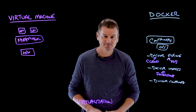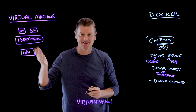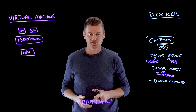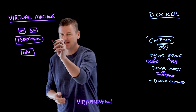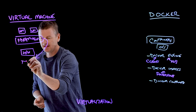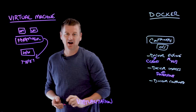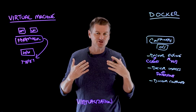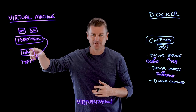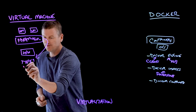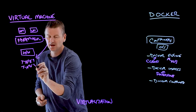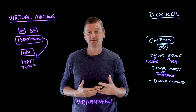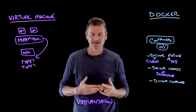For VMs, the hypervisor is the software responsible for creating, managing, and running virtual machines. Hypervisors come in two types. A Type 1 hypervisor, also known as a bare metal hypervisor, runs directly on the host hardware. There's also a Type 2, considered a hosted hypervisor, where the hypervisor runs on top of an existing operating system.